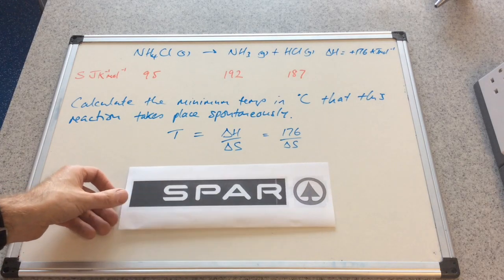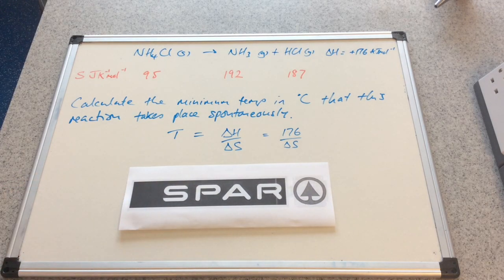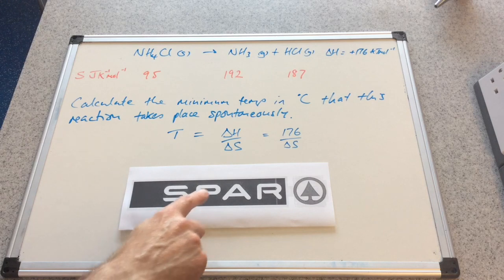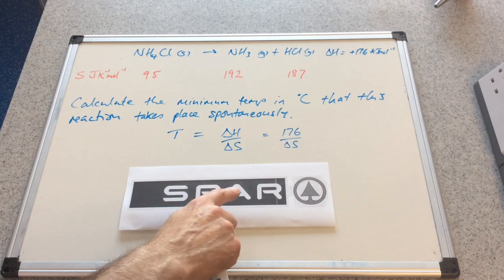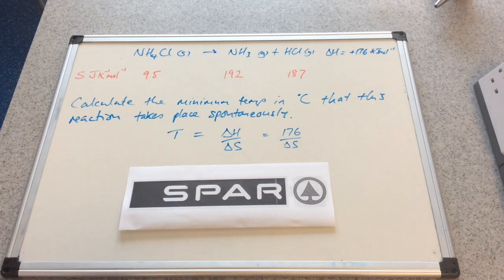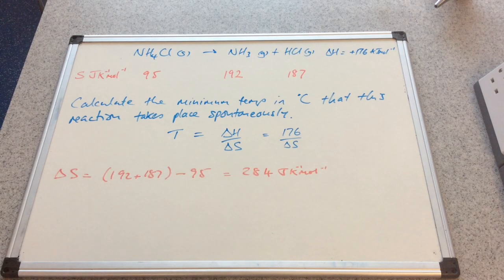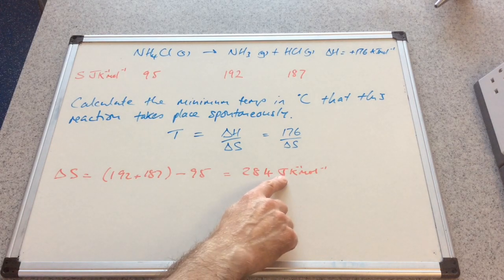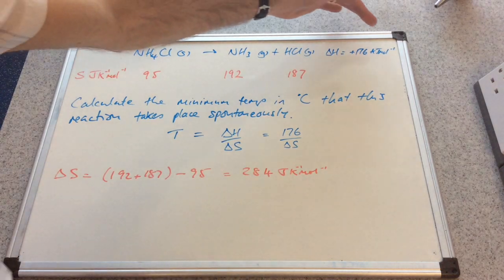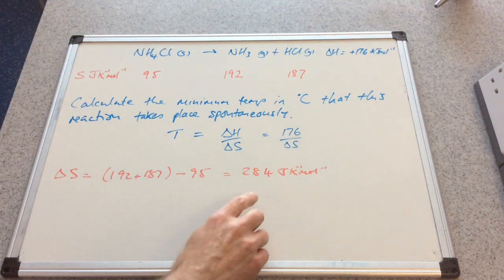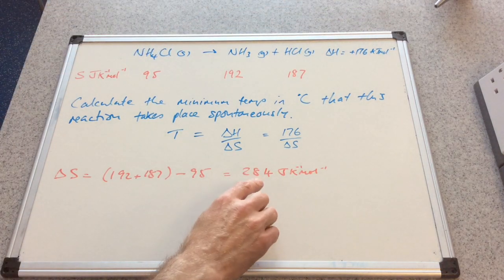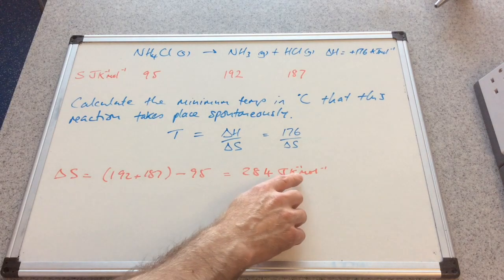My way is the SPAR method, so delta S is the entropies of the products minus the reactants. That comes out at a value of 284 joules per kelvin per mole. Now we've got to factor in the fact that this is in joules but delta H is in kilojoules. So I'm going to divide this by 1000 to get it into kilojoules per kelvin per mole.